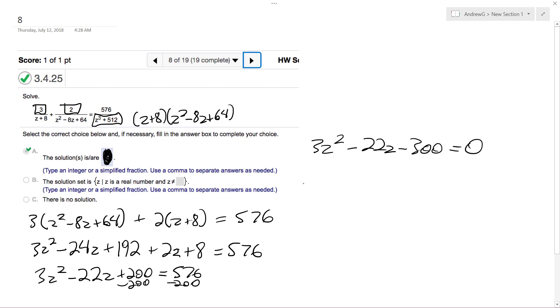So opposite b is 22, plus or minus square root of 22 squared minus 4 times 3 times negative 376, all over 6.